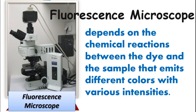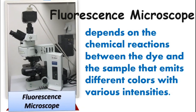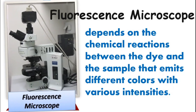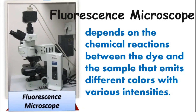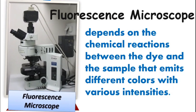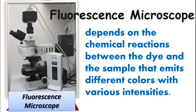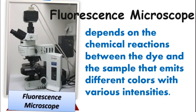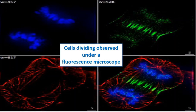Next is the fluorescence microscope. It requires the use of fluorescent dye to create magnified images. It is usually used to study the reflection and absorption properties of organic and inorganic substances within a microscopic organism or cell. This microscope depends on a chemical reaction between the dye and the sample that emits different colors with various intensities. The color and intensity of the image generated by the fluorescence microscope correspond to the specific reactions or processes occurring in the specimen.